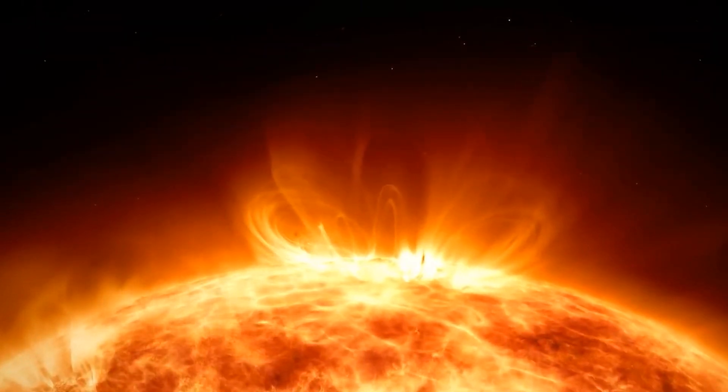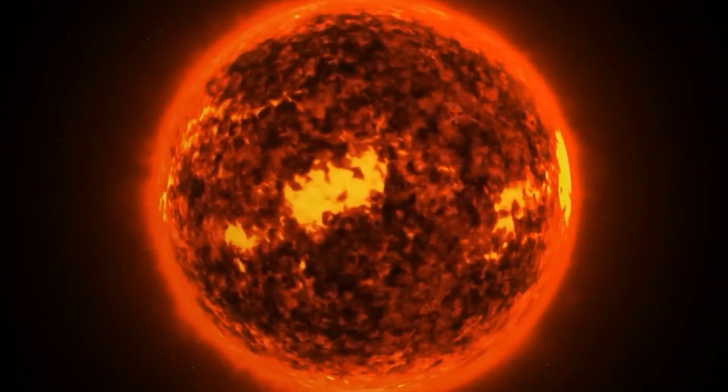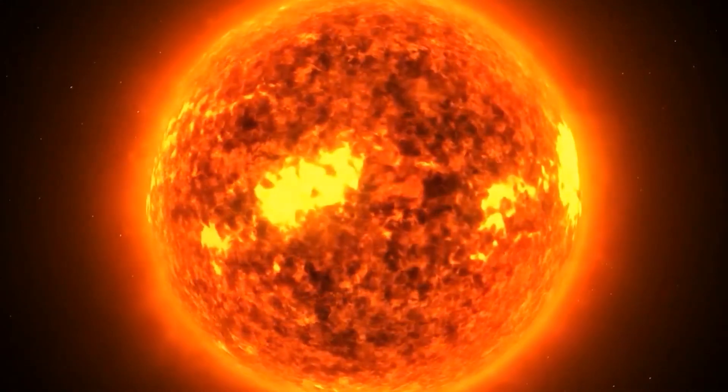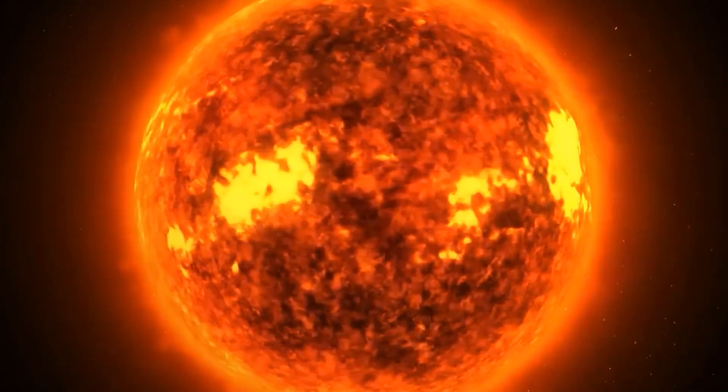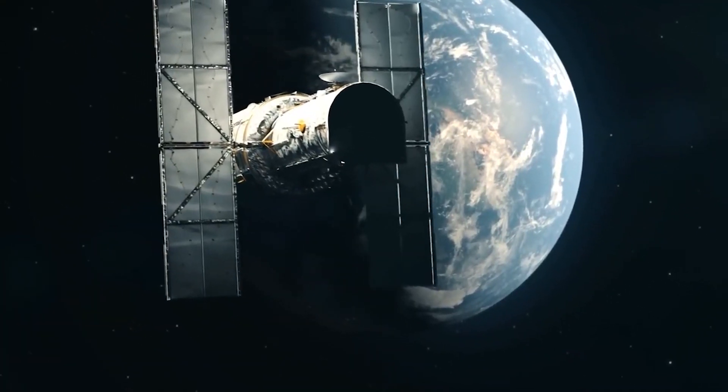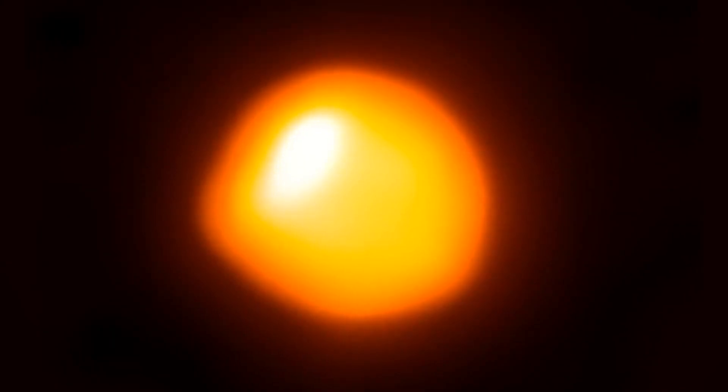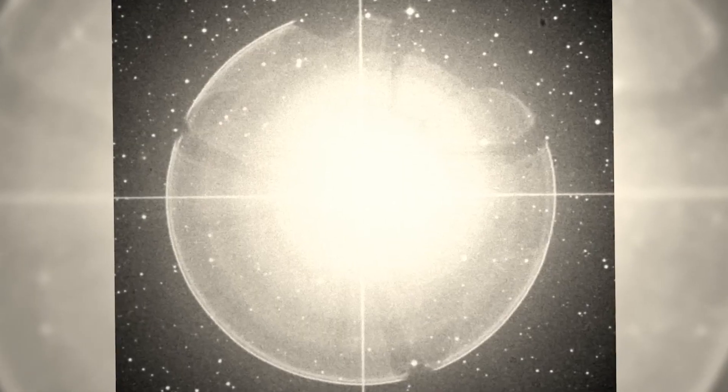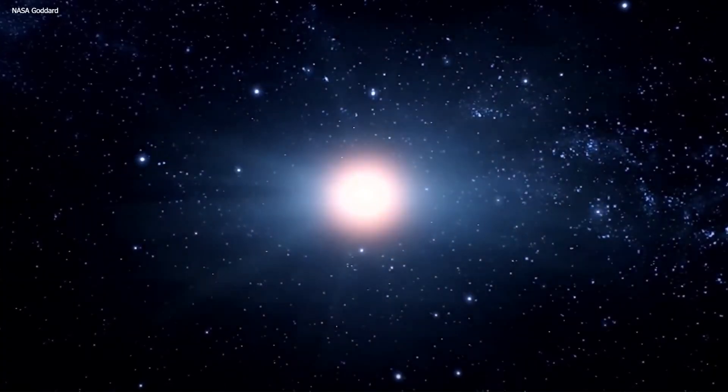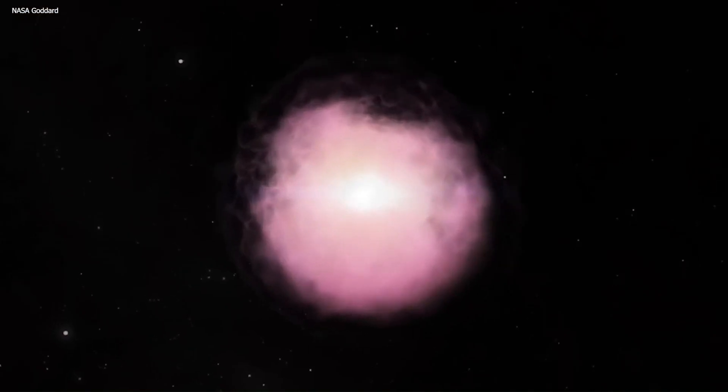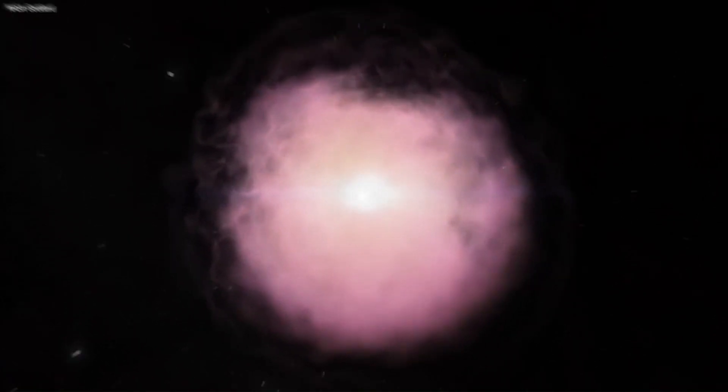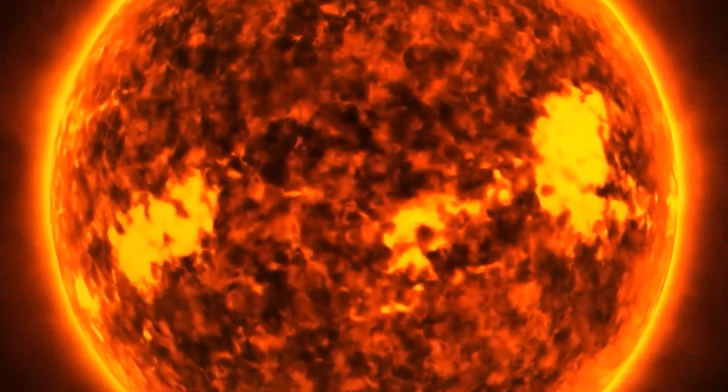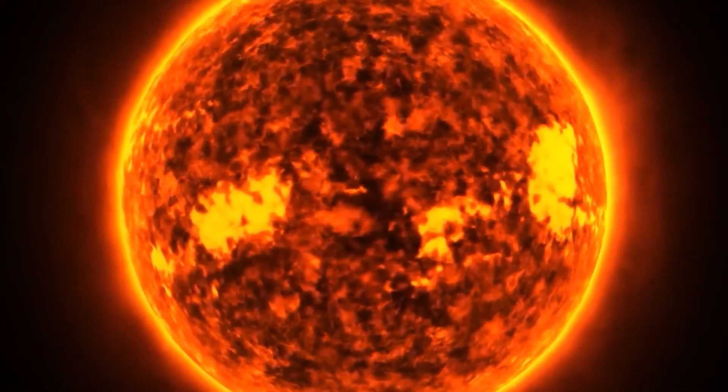Unlike its celestial counterparts, Betelgeuse is a star that refuses to remain static. Its brilliance waxes and wanes, caught in a mesmerizing dance of light. This ever-changing nature gives it a classification as a semi-regular variable star, a luminous beacon that experiences fluctuations in its brightness. Yet, in recent years, Betelgeuse's behavior has become even more intriguing, captivating the attention of scientists and astronomers alike.